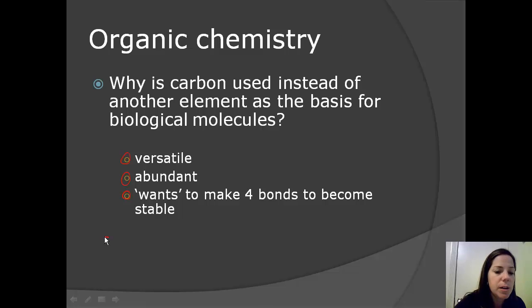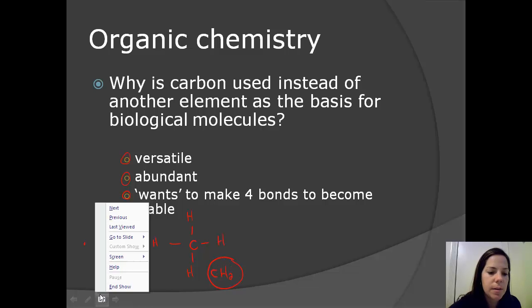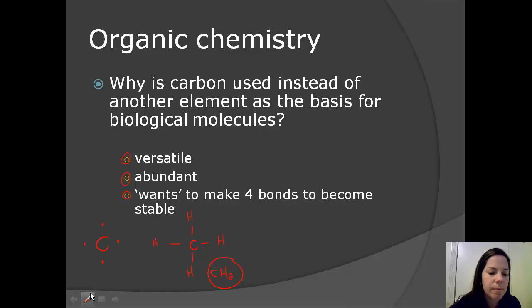So if we take a look at carbon here, and if you've taken chemistry before, then you know that carbon has four valence electrons in its outer shell. Therefore, it wants to make four bonds to become stable. So often, it joins up with hydrogens. So you can see here's a carbon making single bonds with hydrogens. And if I wrote out the chemical formula, that would actually be CH4.